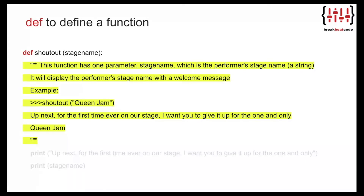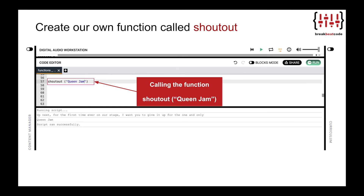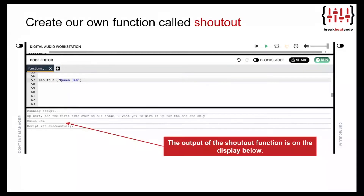Below the doc string we have the block of code for this function, highlighted in yellow, which includes the following print statements: print 'Up next for the first time ever on our stage, I want you to give it up for the one and only' and then print stage name. Just like for loops, while loops, and conditional statements, the block of code inside the function is indented four spaces. When we call the function and pass it a person's stage name, the output appears on the display below.